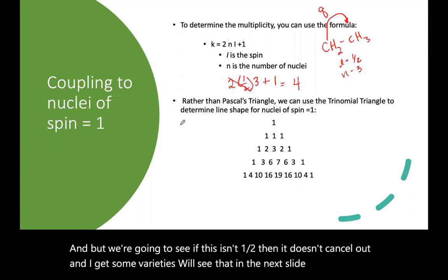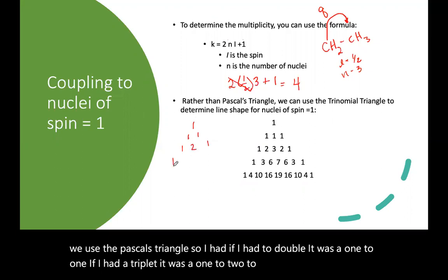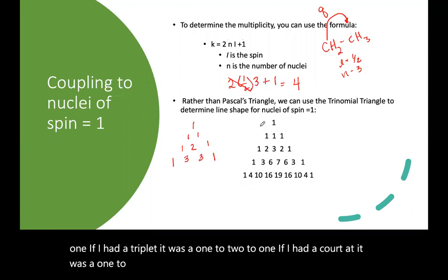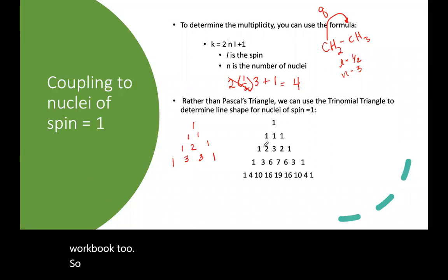And previously we used the Pascal's triangle. So if I had a doublet, it was one to one. If I had a triplet, it was one to two to one. If I had a quartet, it was one to three to three to one. Now we're going to use the trinomial triangle. This is all in your workbook too. You're going to see slightly different patterns that follow that trinomial triangle.